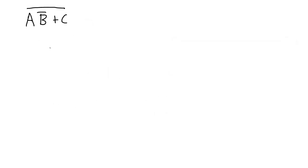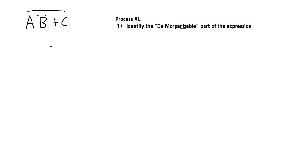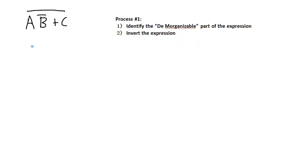I want to go through the process of taking a Boolean algebra expression, identifying parts that can be simplified with De Morgan's theorem, and going through that simplification. For this first process, step one is to identify the De Morganizable part of the expression — the part that has a large portion inverted. In this case, it's all of the expression. Step two is to invert the expression. Note that this step makes an expression that is not equal to the original, but we'll go through a few steps until it is. Inverting gives us A, NOT B, or C. We've inverted the expression, so double inversion will then eliminate any inversion of the whole expression.